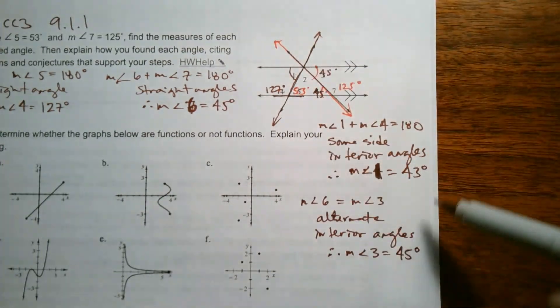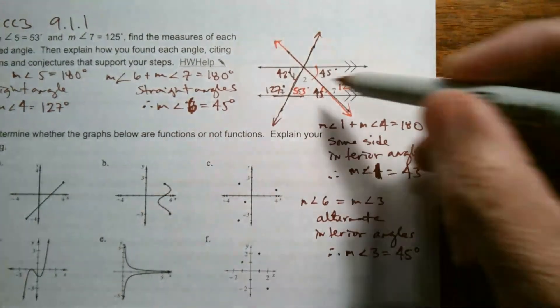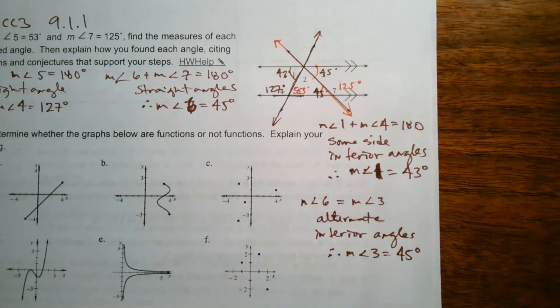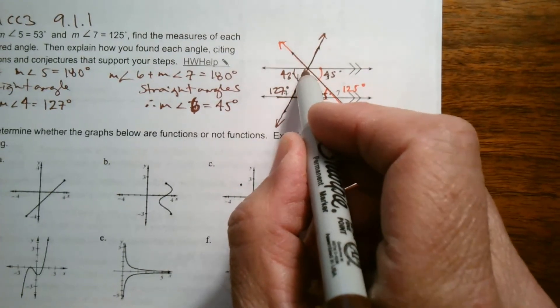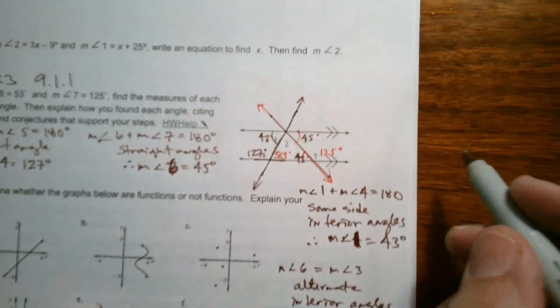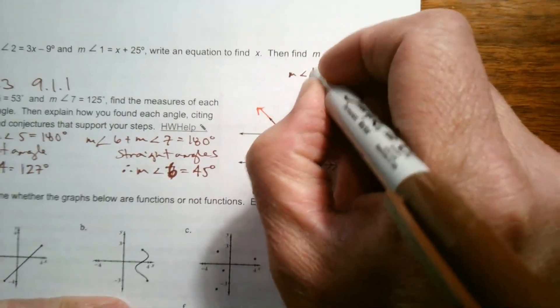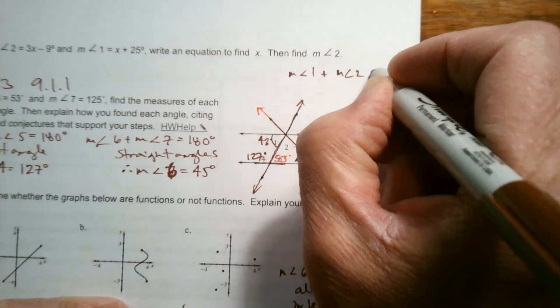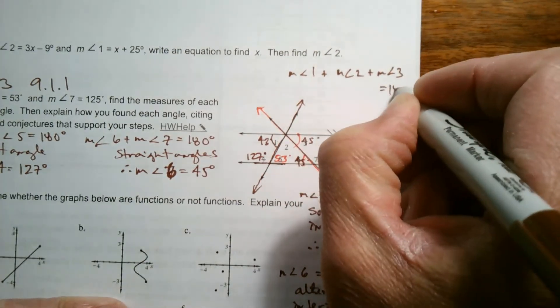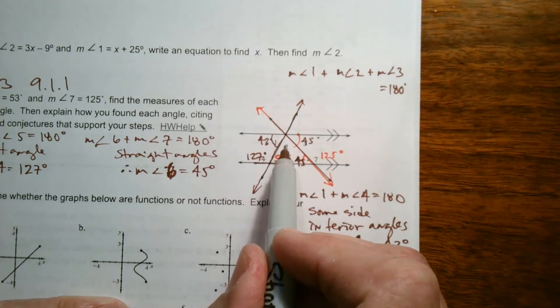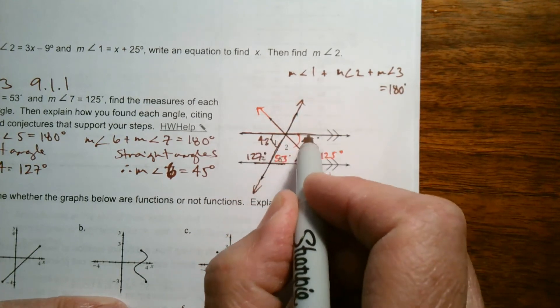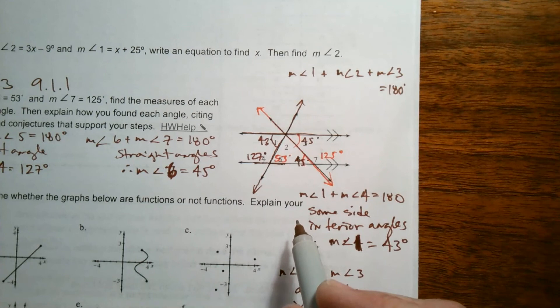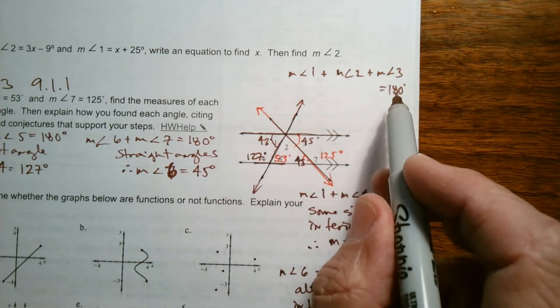My last one I already found was 53 degrees, so I've got to find measure of angle 2. There's a few things I could do to find angle 2. One of them, I know that, I'll just do it this way, I know that all three of these angles, angle 1 plus 2 plus 3. The measure of angle 1 plus the measure of angle 2 plus the measure of angle 3, all of those equal 180 degrees, because this right here is a straight line, and so all three angles add up to be that straight angle.